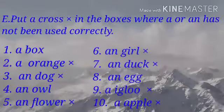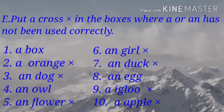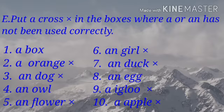Exercise E. Put a cross in the boxes where A or AN has not been used correctly. Number 1, a box — it is correct. Number 2, an orange — incorrect, so you have to give a cross mark.